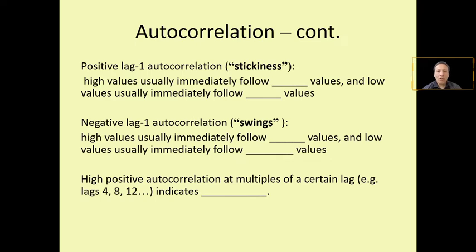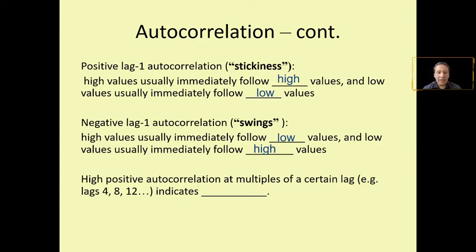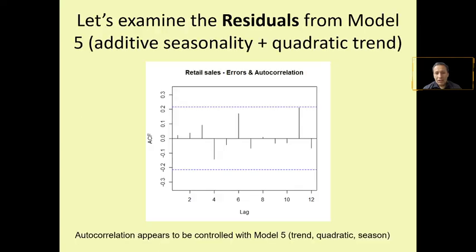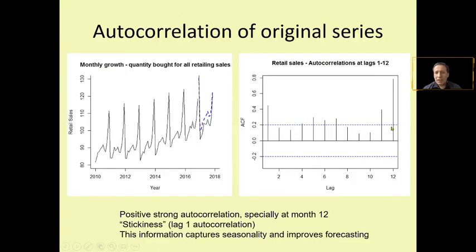Positive lag one autocorrelation — stickiness — is when high values immediately follow high values and low values immediately follow low values. Negative lag one autocorrelation is the opposite: high values immediately follow low values. High positive autocorrelation at multiples of a certain lag, for instance lags 4, 8, or 12, indicates seasonality. As seen in our previous graph, autocorrelation was capturing seasonality at month 12.